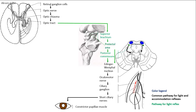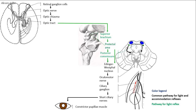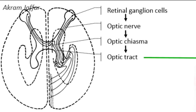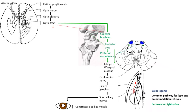This chart shows the pupillary light reflex pathway. I will superimpose the accommodation reflex pathway, and you will notice that the accommodation reflex pathway in its initial part is common with the light reflex. It starts from retinal ganglion cells that send impulses through the optic nerve, optic chiasma, and then the optic tract.